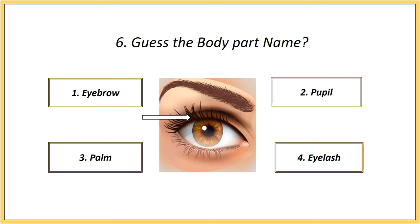Sixth one. Guess the body part name. Options: eyebrow, pupil, palm, eyelash. Answer is eyelash.